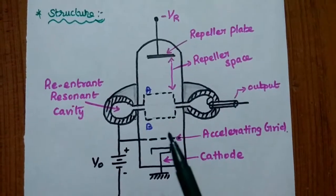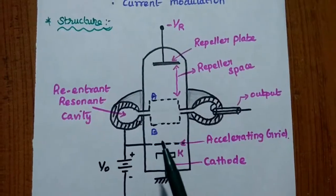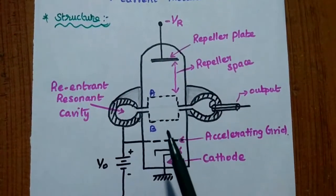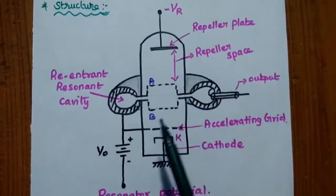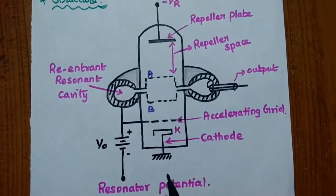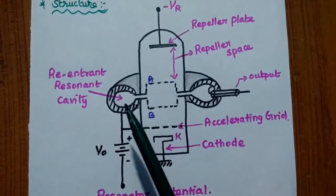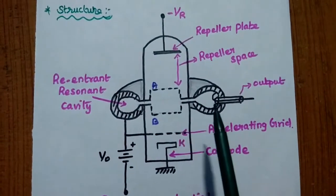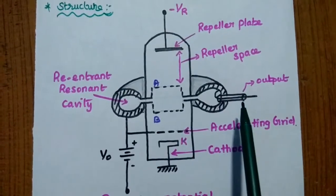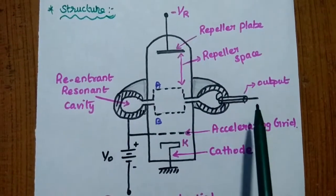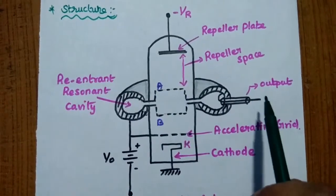Since it is used as a microwave oscillator, there is no input. The signal is generated with the resonator potential — as a noise signal in this cavity. The output is taken from this cavity using a magnetic loop coupling method.